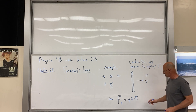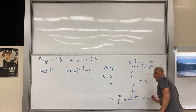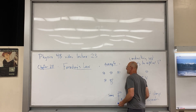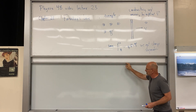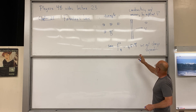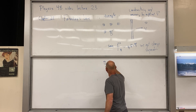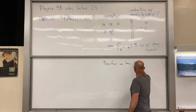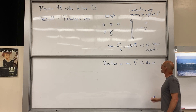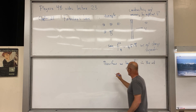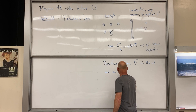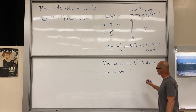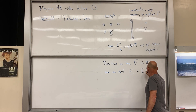We end up with charge separation — positive charge at the top and negative charge at the bottom. Since we have charge separation, there's an electric field E in the rod pointing from plus to minus, and therefore an EMF — an electromotive force or voltage, written as uppercase epsilon — equal to E times L.